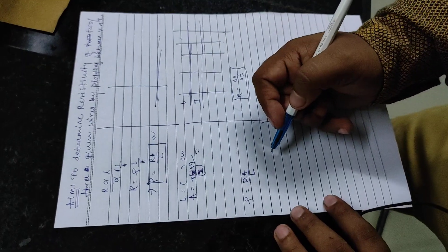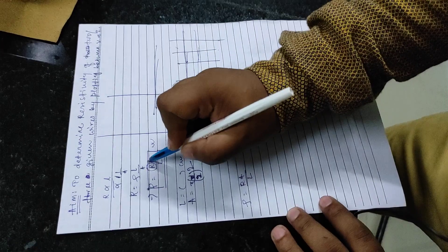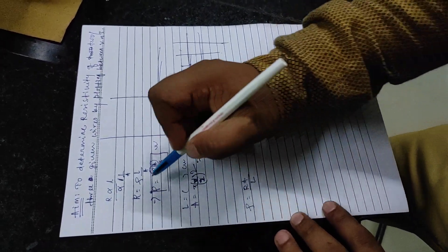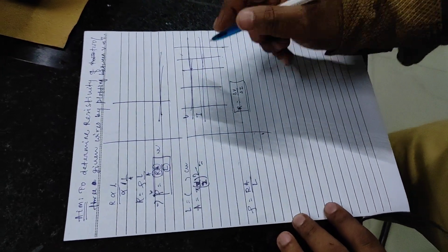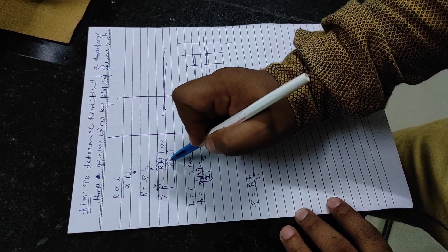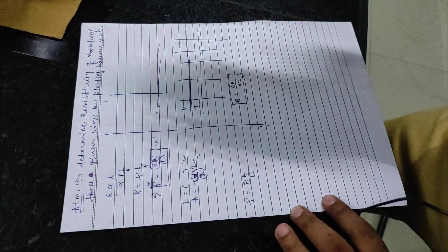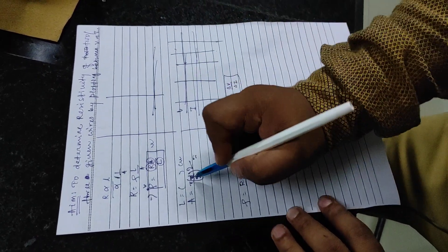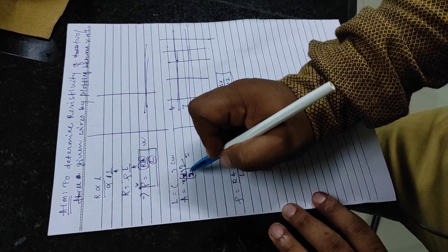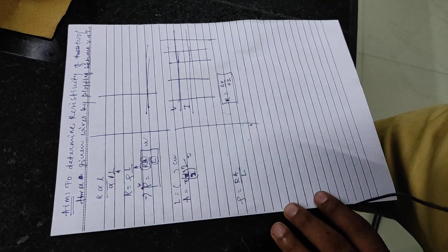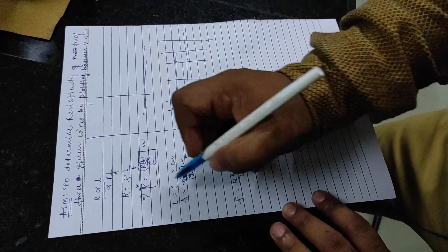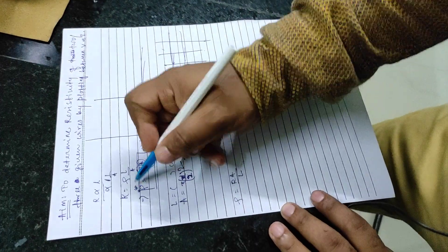We will calculate resistance, area of cross-section, and length of the given wire to find the resistivity. R will be calculated from the graph between voltage and current. Length will be measured with a scale, and area of cross-section will be written as pi times (d/2) squared — so we measure the diameter of the given wire with a screw gauge. Once we have all the data, we can calculate the resistivity.